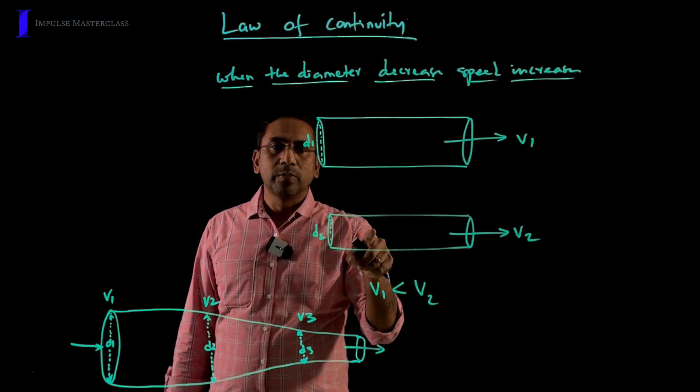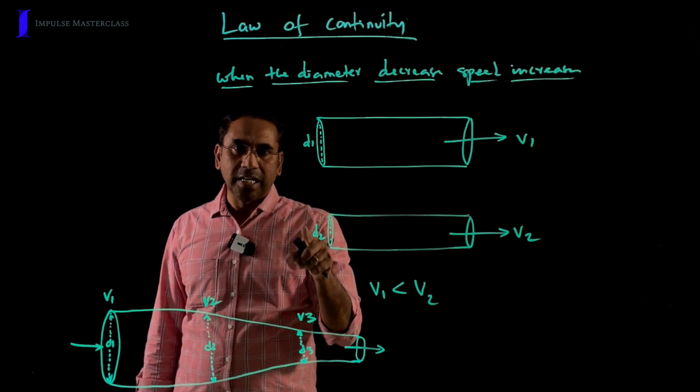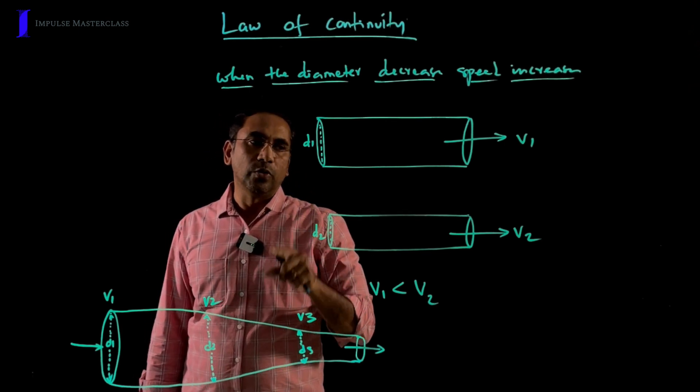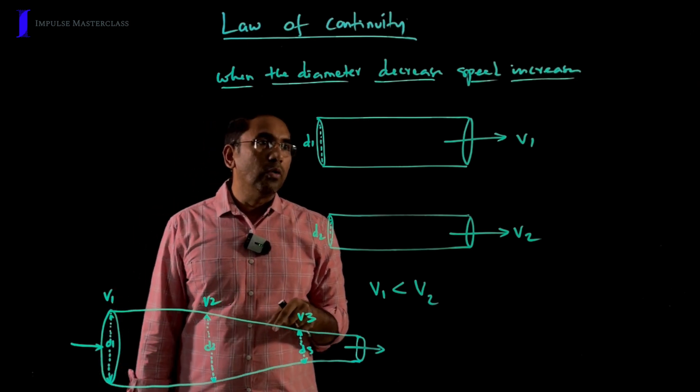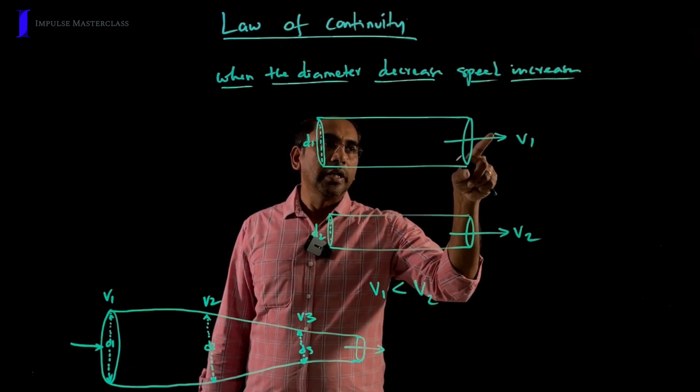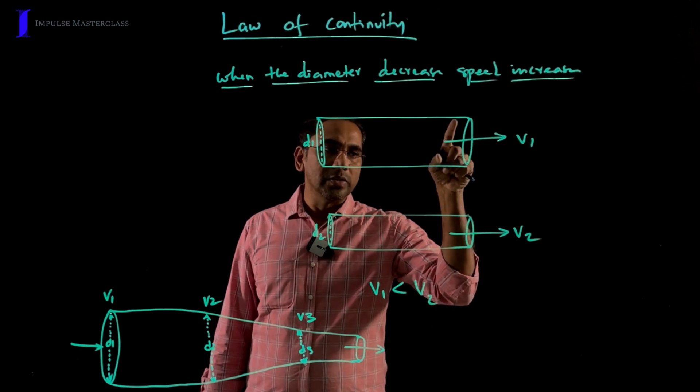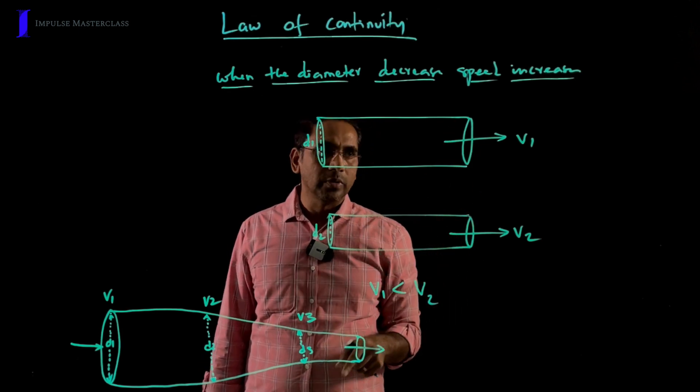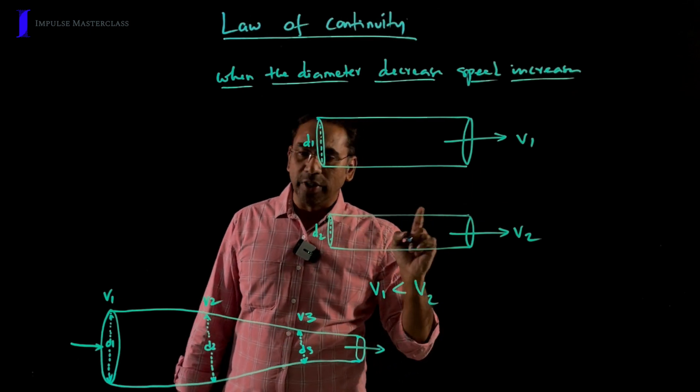And both these pipes are connected to two different tabs with the same water flow. When we look at the flow of water in these two pipes, the flow of water in pipe 1 is lesser than pipe 2. That means V1 is less than V2.